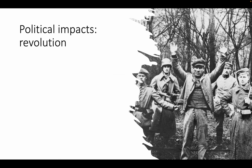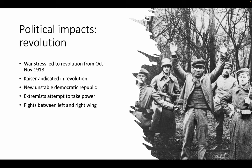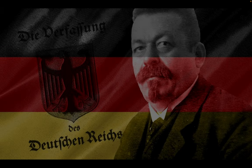Political impacts: there was a revolution. War stress led to revolution from October to November 1918. The Kaiser abdicated and was kicked out. There was a new, and the key word here is unstable, democratic republic. Extremists attempted to take power — communists, nationalists — and there were fights between the left and right wing. There were many despised new democratic leaders, and there was a sense of betrayal, which we will cover soon.